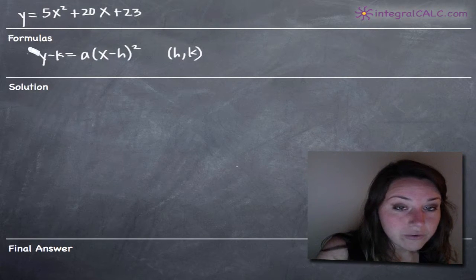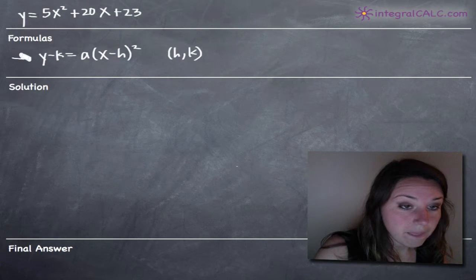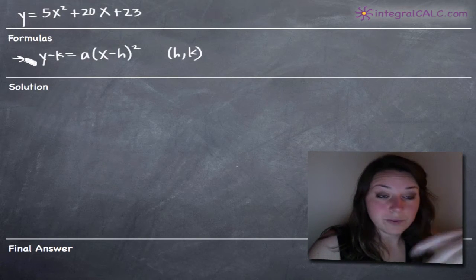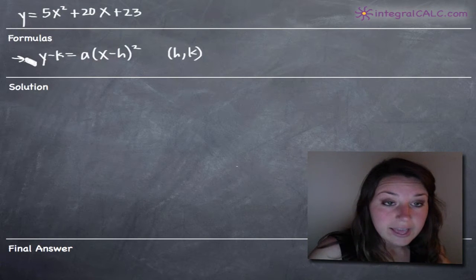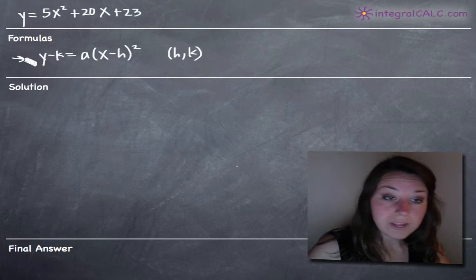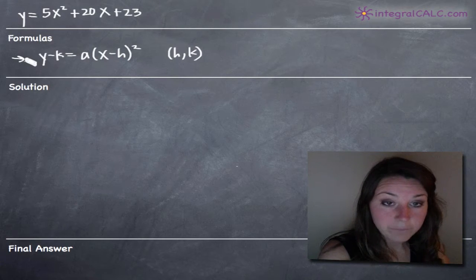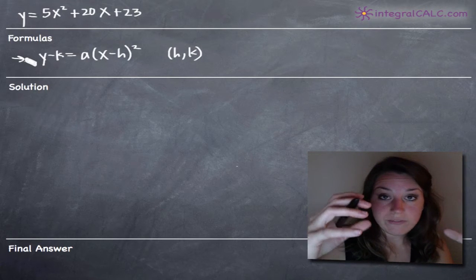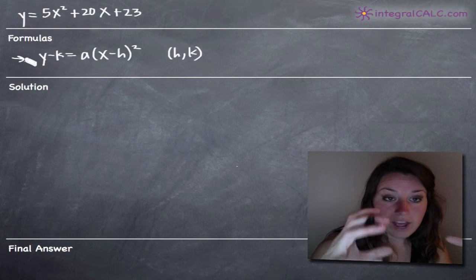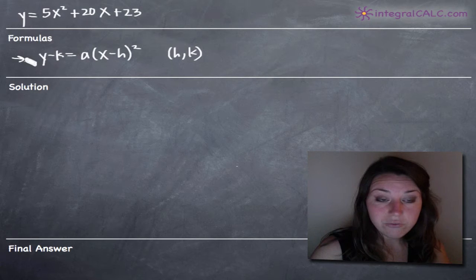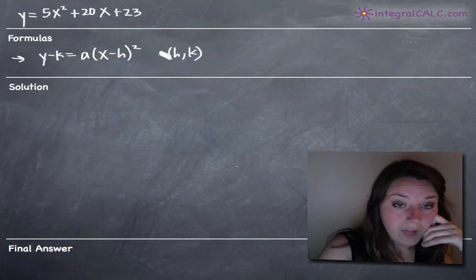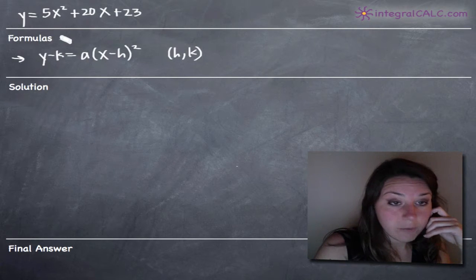And the formula we're going to be using, I've written down here. Basically what we're going to do with this problem is take our original function and transform it into the form given by our formula here. And when we've changed the form of our equation into this new form, we'll be able to pull out the vertex of our parabola.